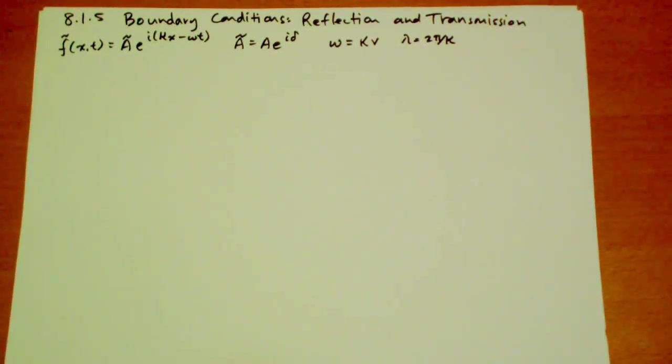Interesting things happen at the boundary between two systems that carry waves where the velocity of the waves are different on either side.